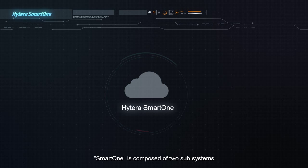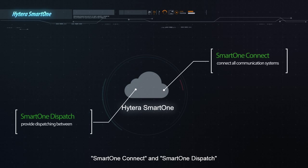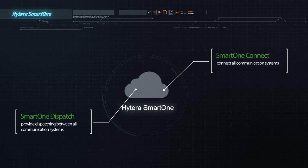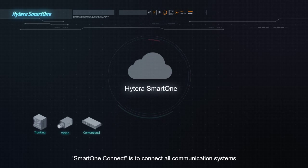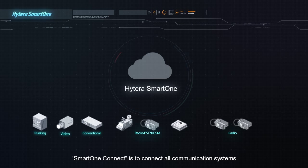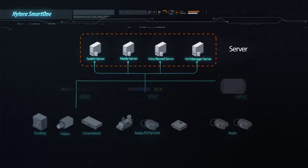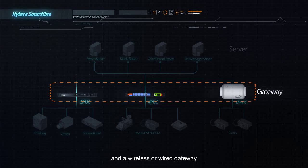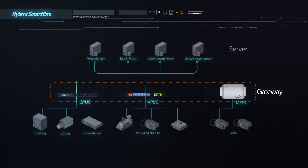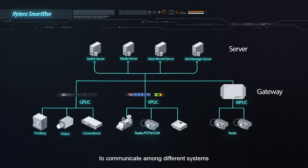SmartOne is composed of two subsystems: SmartOne Connect and SmartOne Dispatch. SmartOne Connect is designed to connect all communication systems. It includes a central server and a wireless or wired gateway, connecting different systems and making it possible to communicate among them.